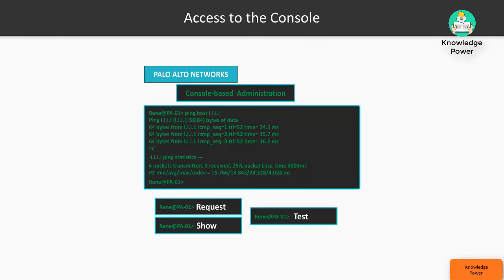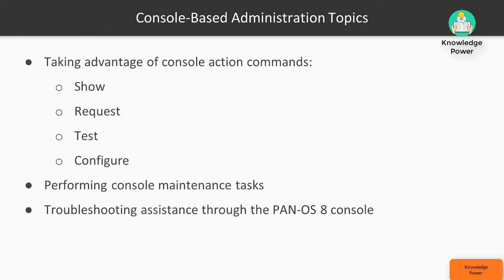In our previous videos, we took a look at the web user interface in PanOS 8. This video, we're going to focus our attention on the console. Like any network device, at some point you will be using the console to perform basic troubleshooting and configurations that you might not be able to perform from the GUI. We're also reviewing the request, show, and test actions in PanOS 8. This will provide the tools you need if through the GUI you're not able to resolve an issue and need to do some deep-dive debugging on your appliance.